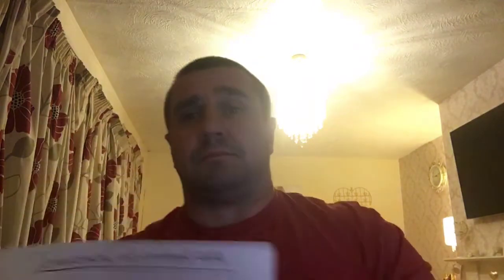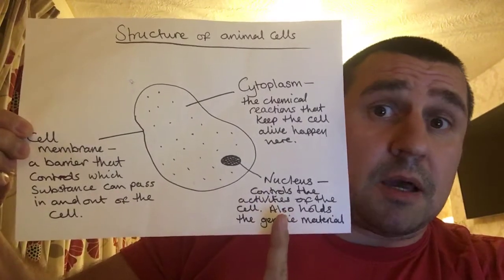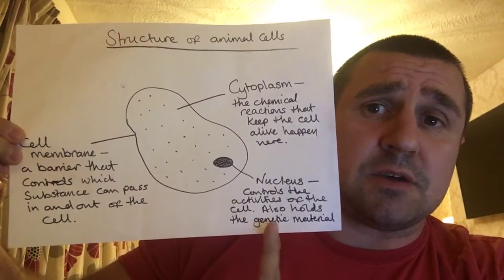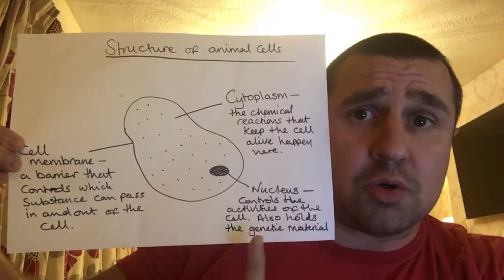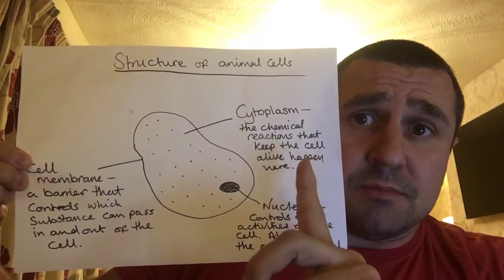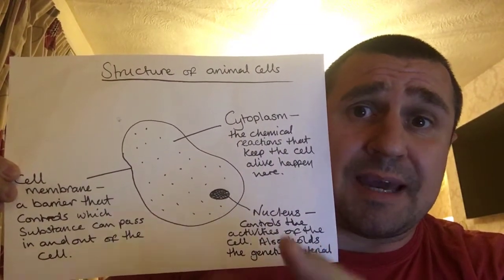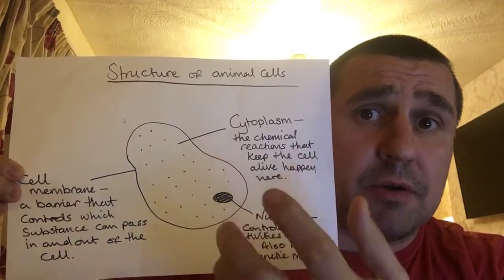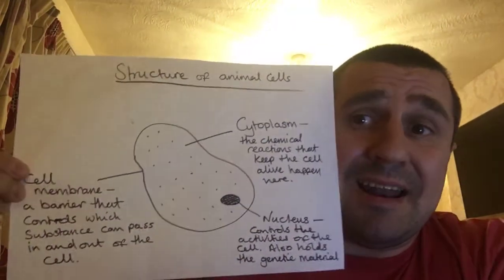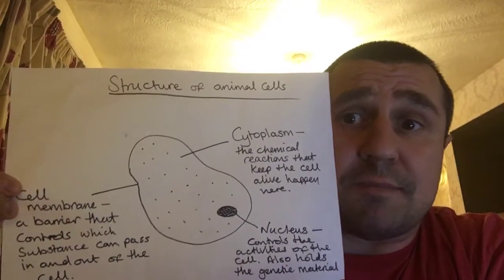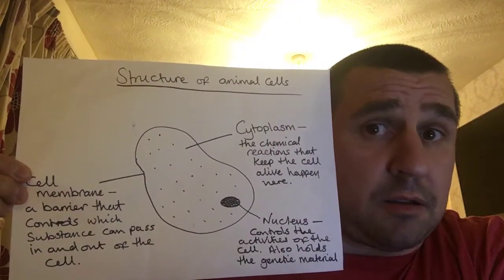Just to recap — and there's a little diagram here. The nucleus controls the activities of the cell on a day-to-day basis and is where the genetic material is stored. The cytoplasm is where all the chemical reactions happen and keeps the cell alive. The cell membrane controls what substances go in and out of the cell.